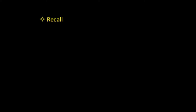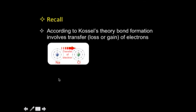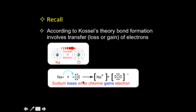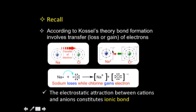Now let us recall a few things before we come to the main theme of today's session. According to Kossel's theory, bond formation involves transfer — that is, loss or gain — of electrons. For example, in sodium chloride, an electron from the sodium atom is transferred to a chlorine atom: sodium loses an electron and becomes a cation, chlorine gains an electron and becomes a chloride anion. These two charged species interact electrostatically, and this electrostatic interaction between ions of opposite charge constitutes an ionic bond. Compounds formed in this fashion are called ionic compounds or ionic solids.